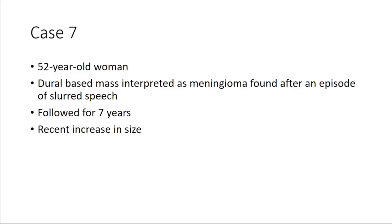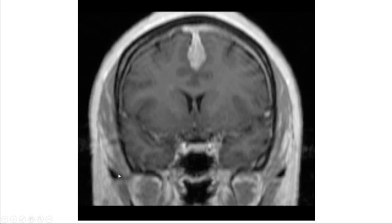Case 7 is a 52-year-old woman with a dural-based mass interpreted as meningioma, found after an episode of slurred speech. The mass was followed for seven years because it was stable and small — not felt to be worth resecting — but had a more recent increase in size. The mass involved the midline, with a little edema, and this enhancing extra-axial mass around the falx had meningioma as the leading consideration.